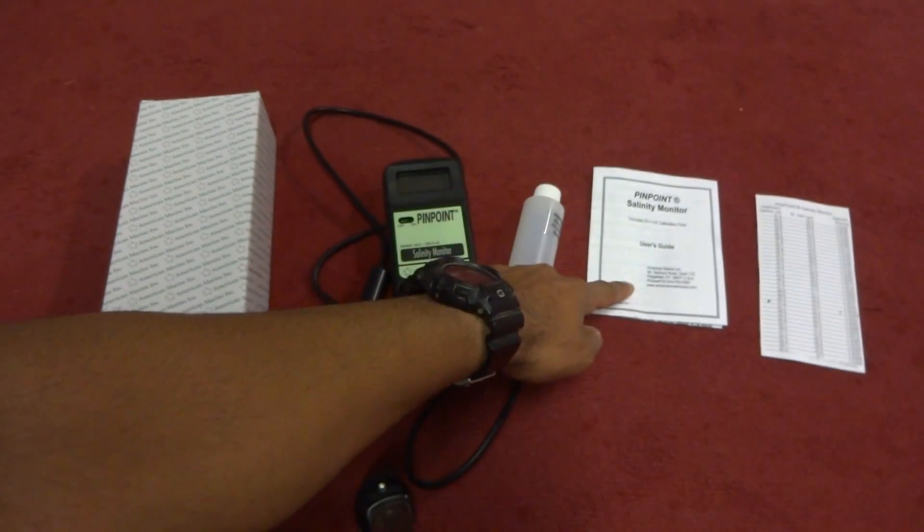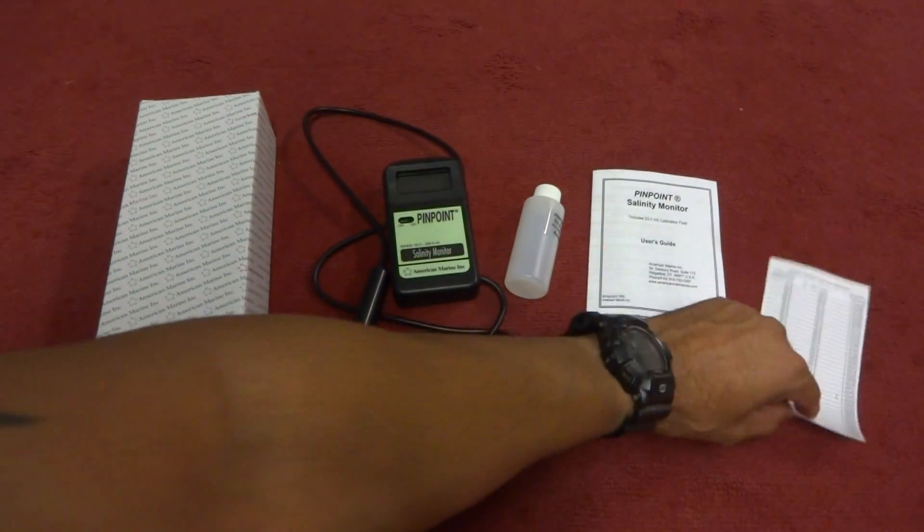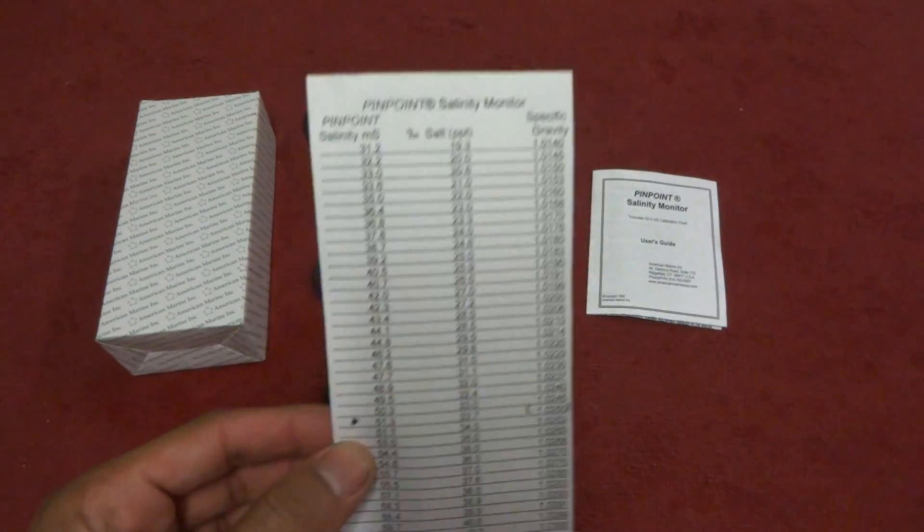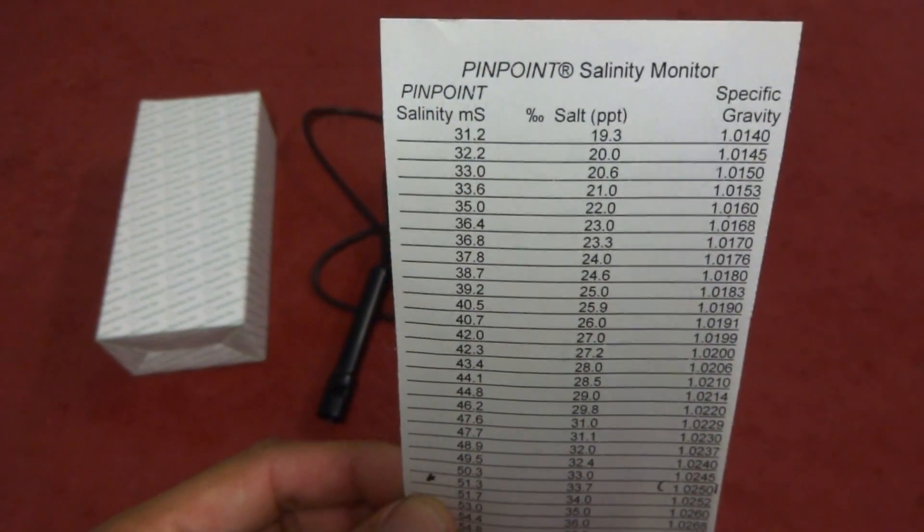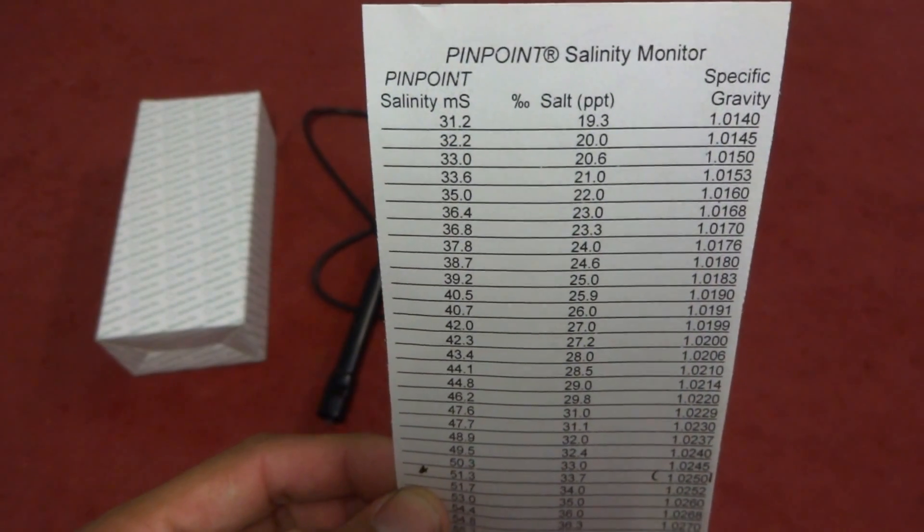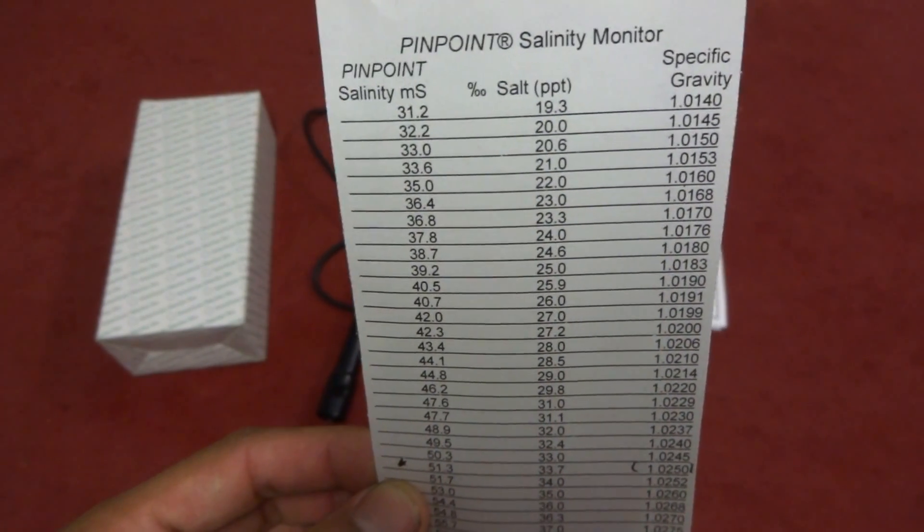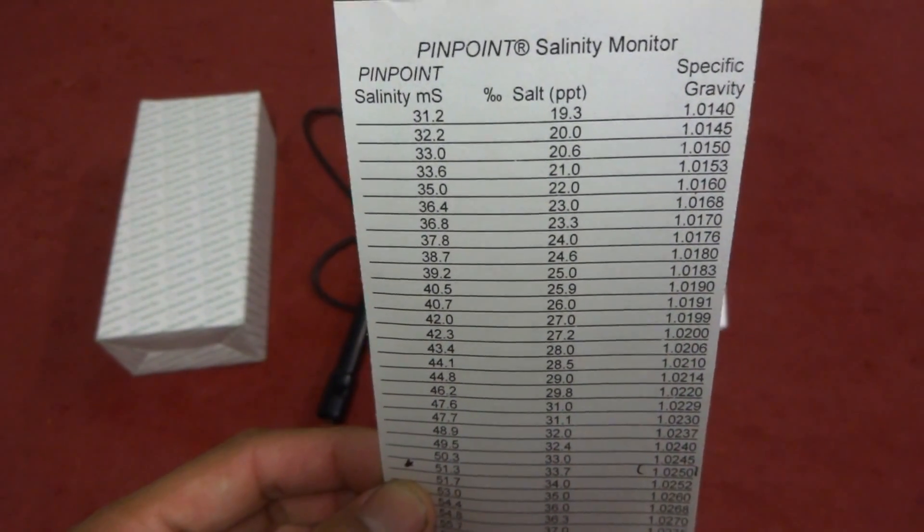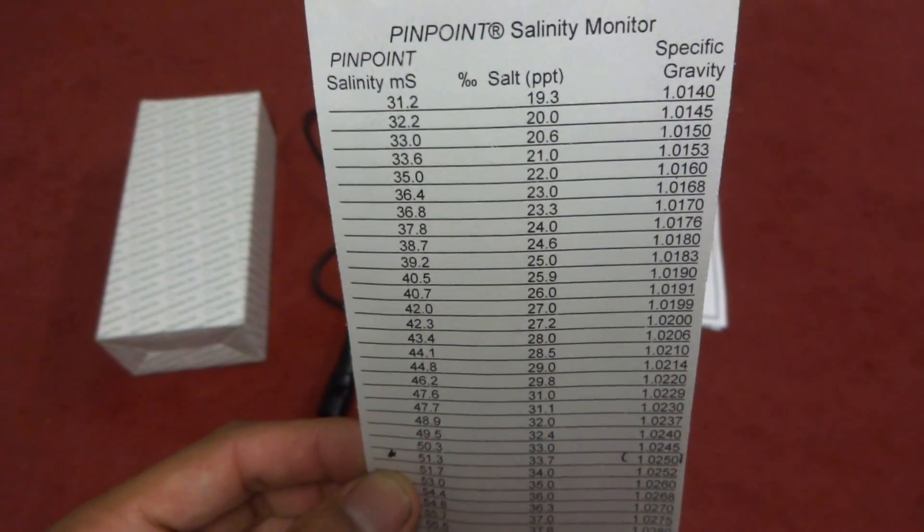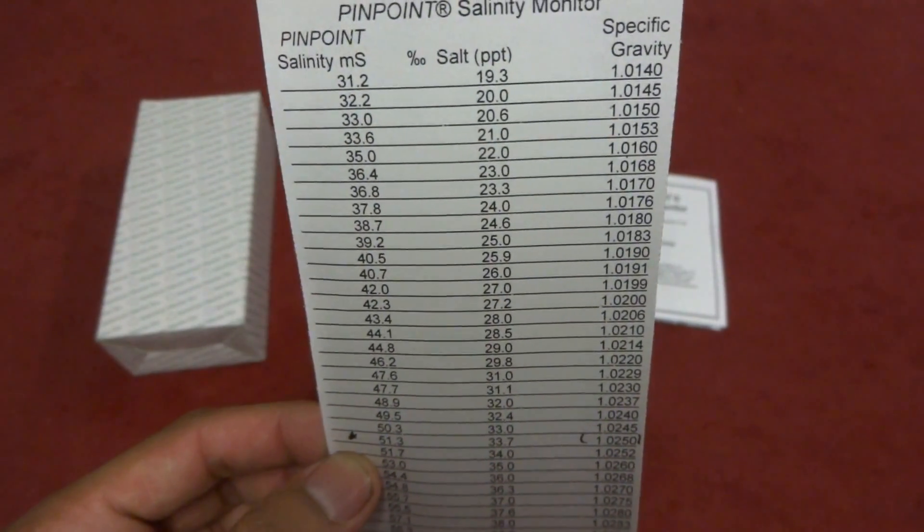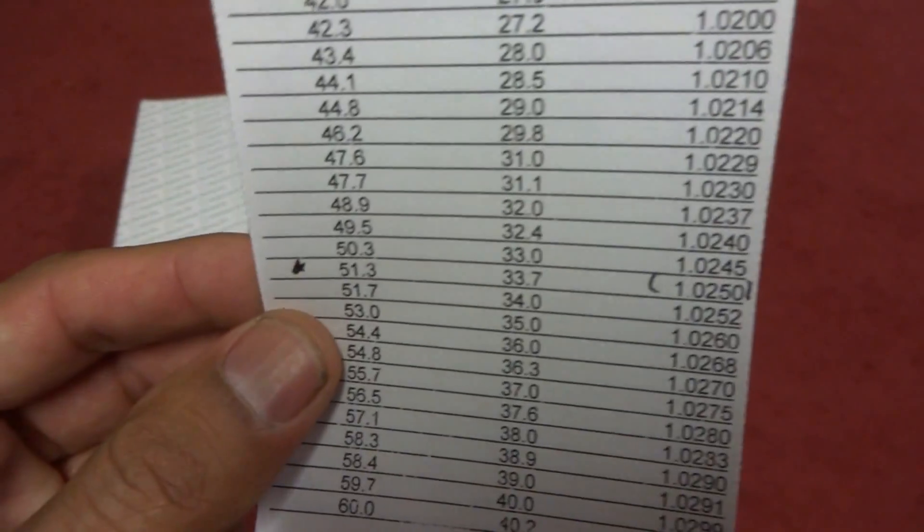You get a user's guide and then you get this salinity chart that measures the salinity in different variations. Salinity ms, salt parts per thousand and specific gravity. And then it will translate whatever variation you're looking at into specific gravity or whatever other variation you're looking for.